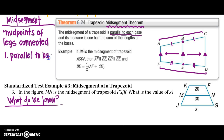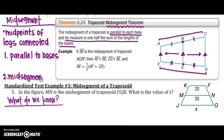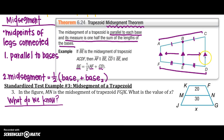The midsegment is parallel to the bases, and it also measures one-half the sum of the lengths of the bases. We can set up an equation: the midsegment BE equals one-half of base one, which is AF, plus base two, which is CD.